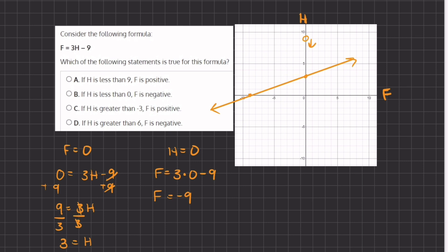Now let's take a look at B. If h is less than zero, so if h is less than zero, f is negative. This does seem to be true because all the numbers that are below the x-axis, that means that all the f values will be negative. So B is correct.